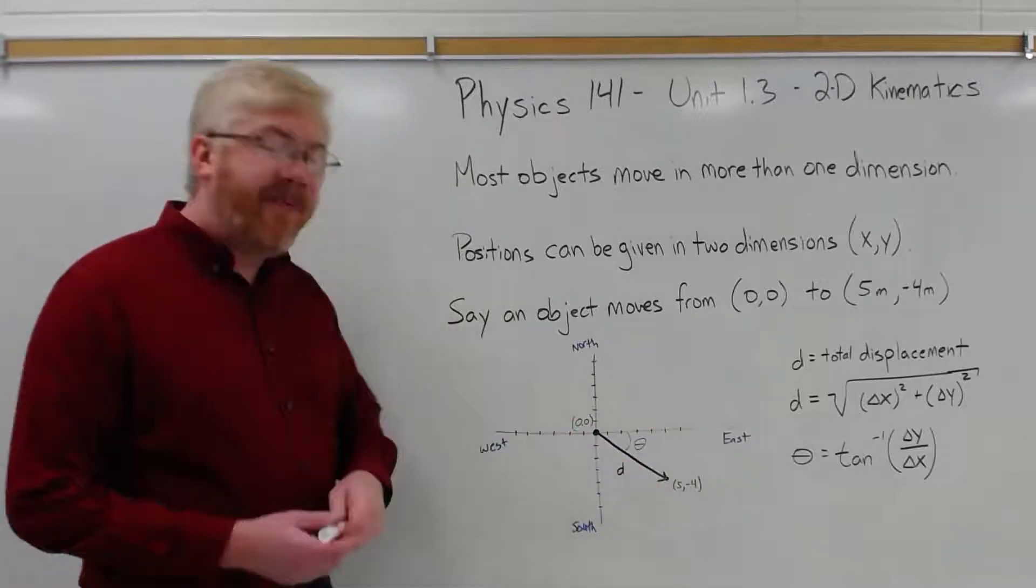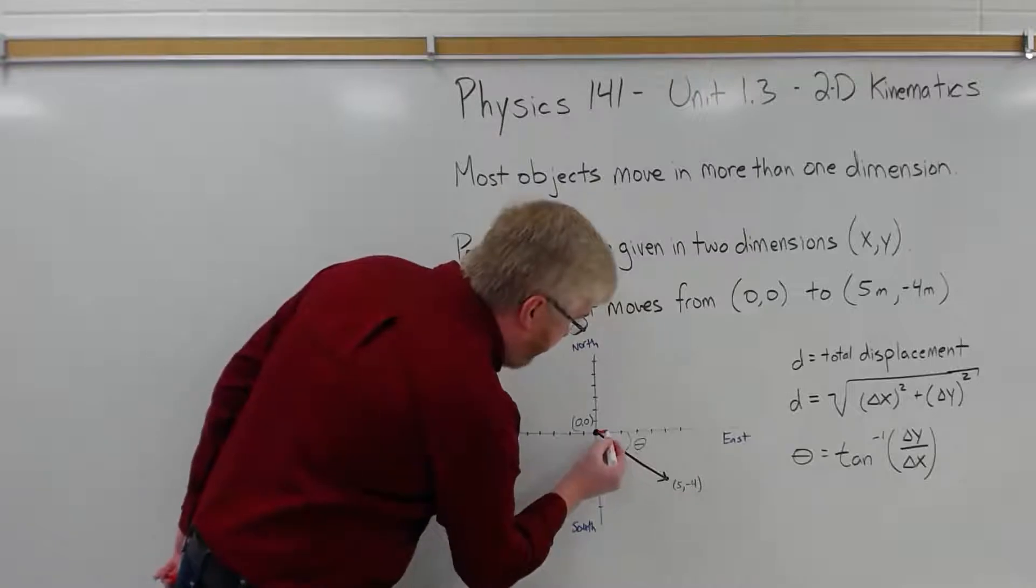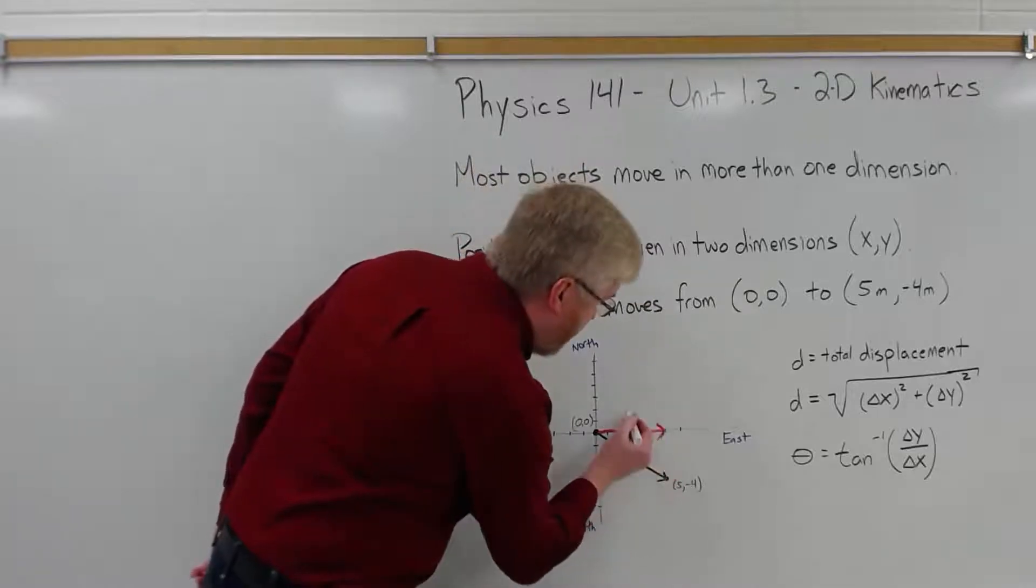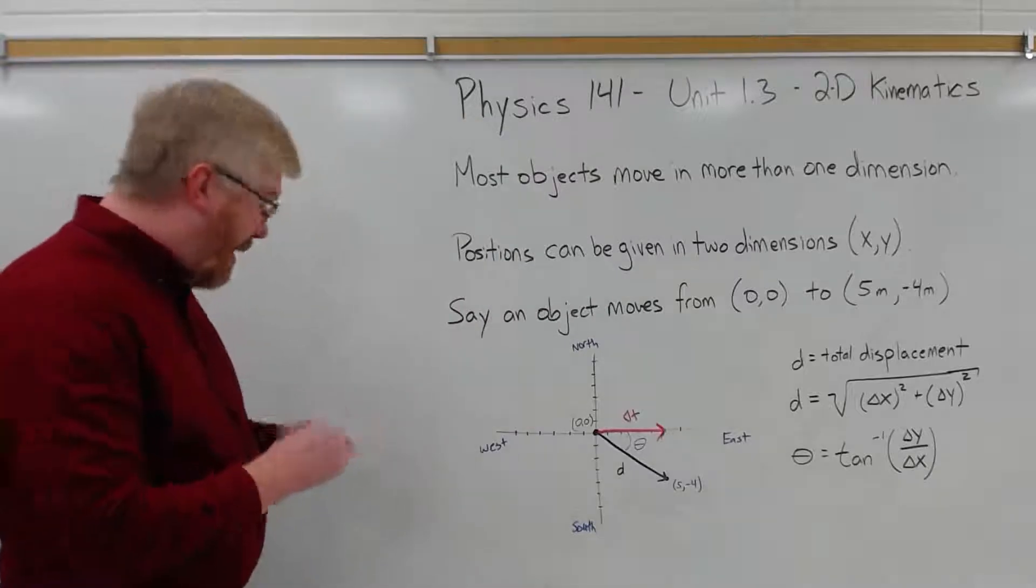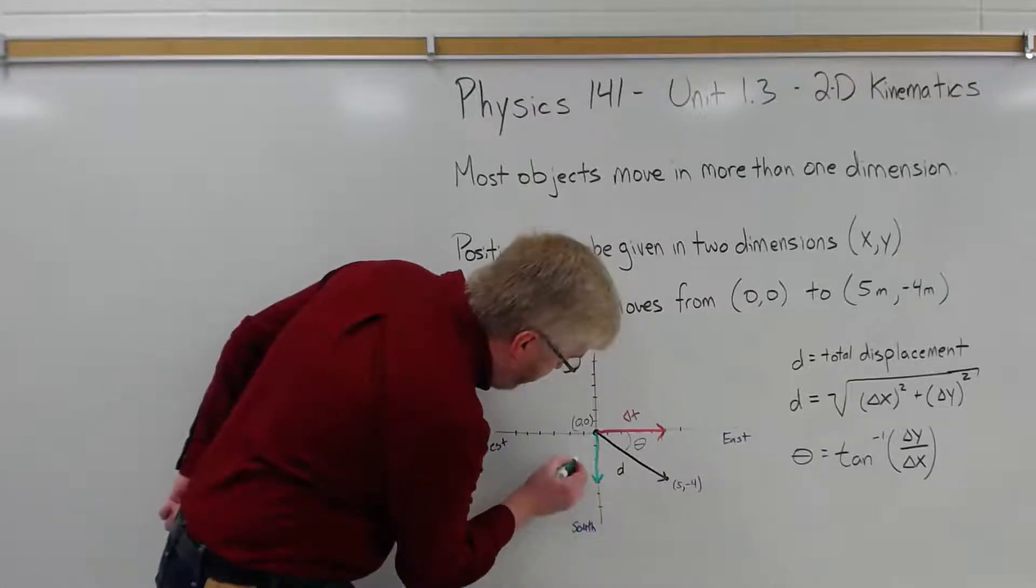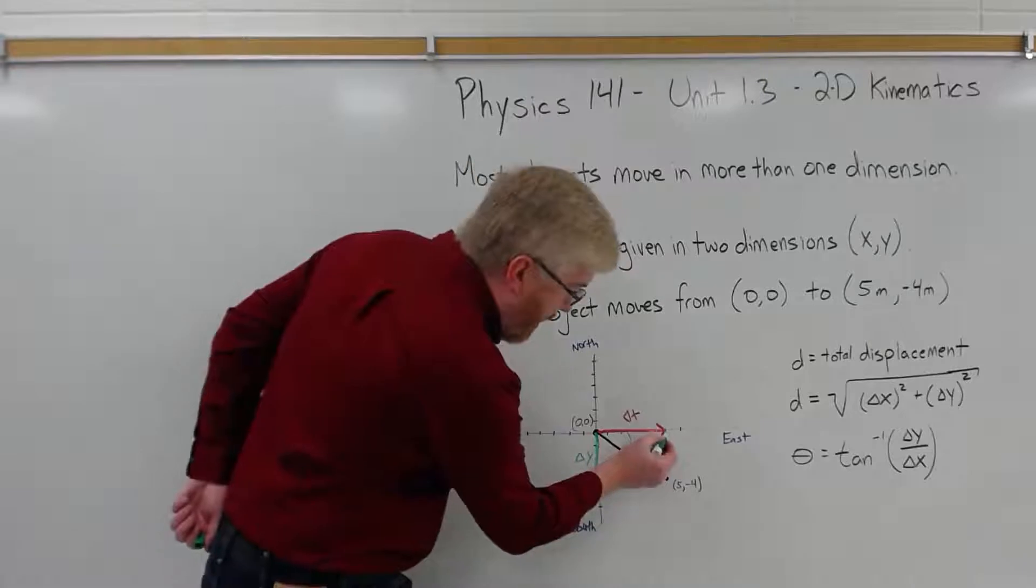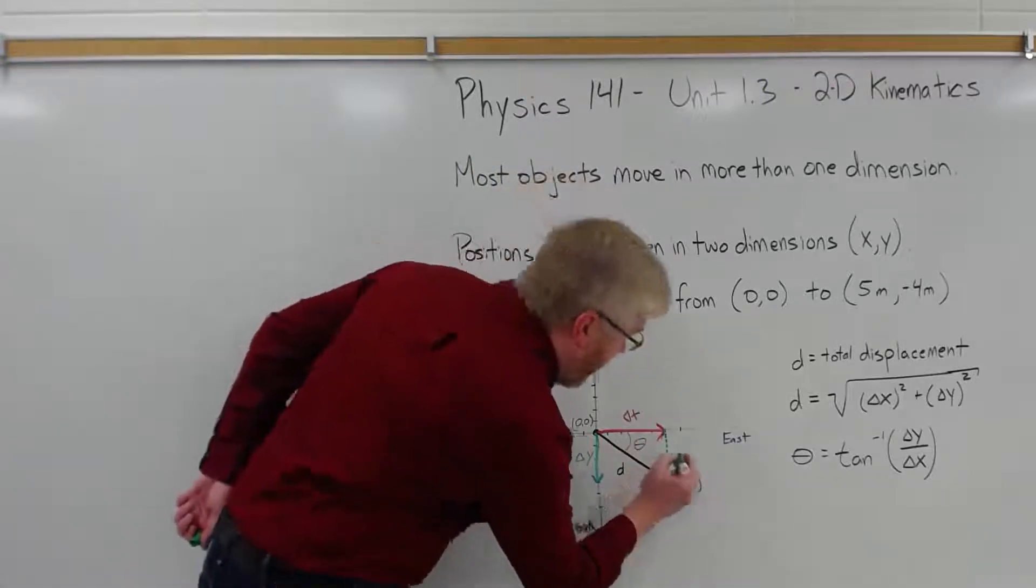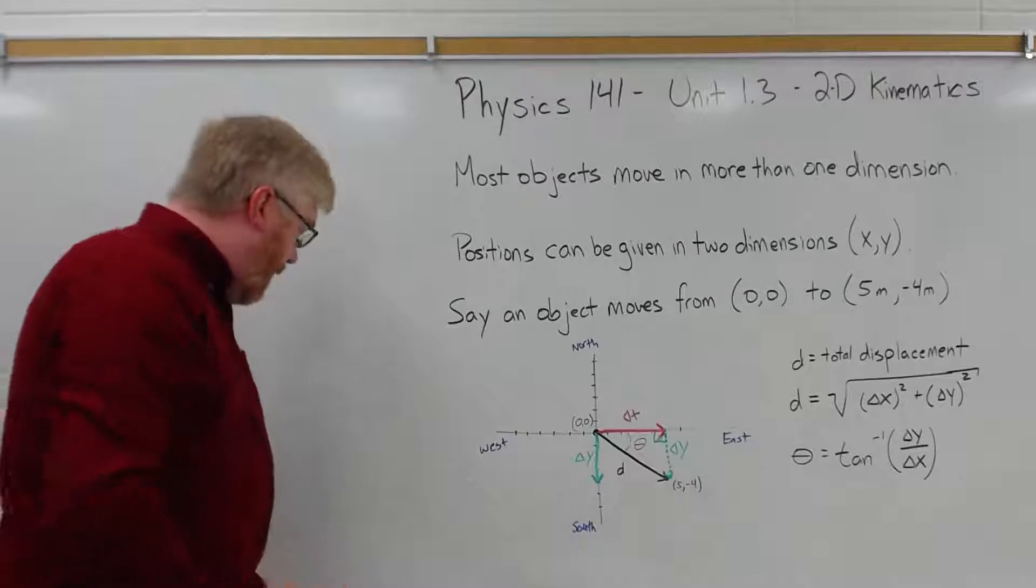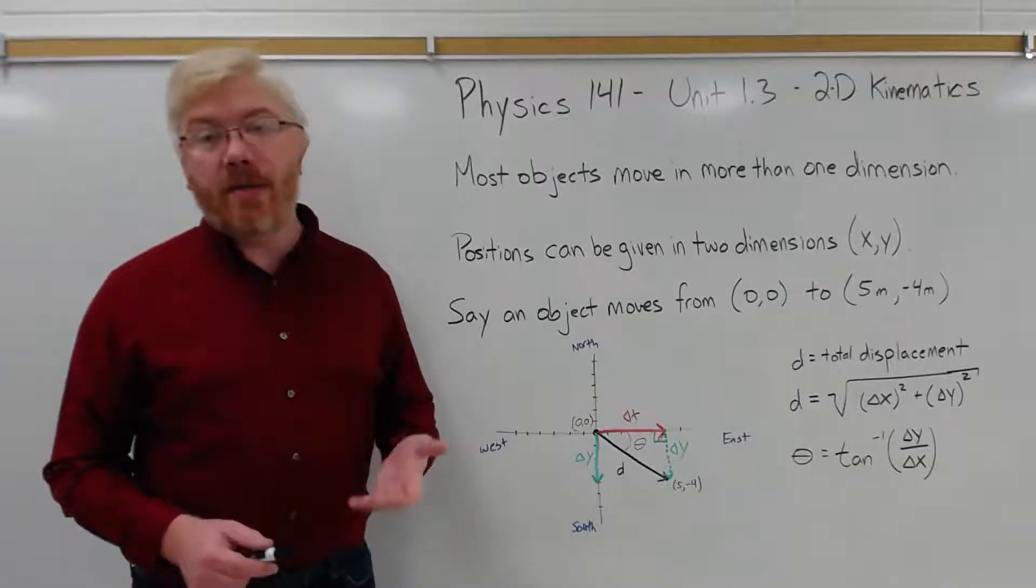But that's actually not difficult to do, because we know basic geometry. We know that the displacement was positive 5 meters. So this is delta x. And we know the displacement in the y direction was down negative 4 meters. 1, 2, 3, 4. This is delta y. Well, this is the same length here, delta y again. This is a right triangle. So we know what the sides are of the right triangle. We're trying to find the length of the hypotenuse. We just used the Pythagorean theorem.